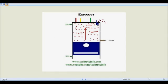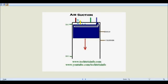Here comes the fifth stroke. The piston is at the top dead center and moves from the top dead center towards the bottom dead center as shown by the arrow. At this point the air suction valve opens — this is an additional stroke — and pure air is sucked inside from the atmosphere into the cylinder. That is the air suction stroke.